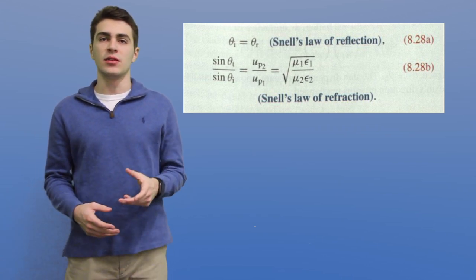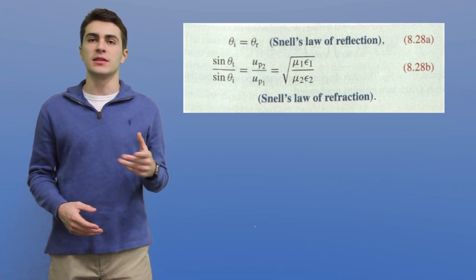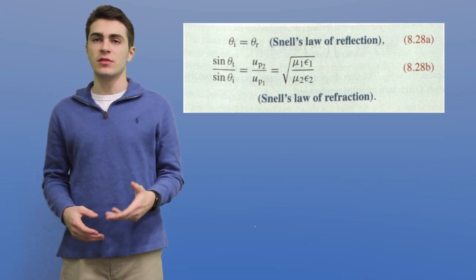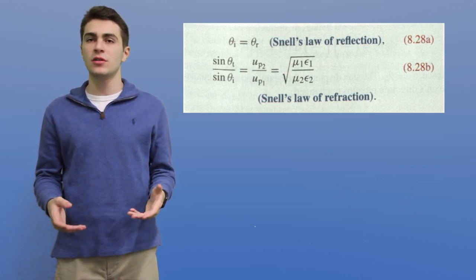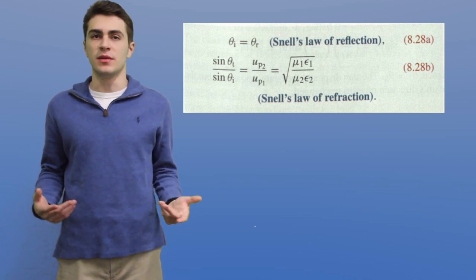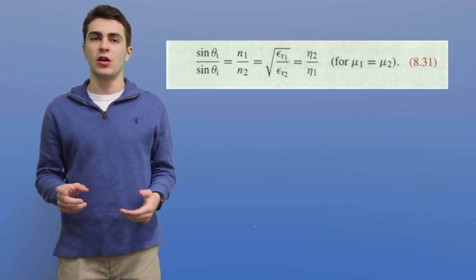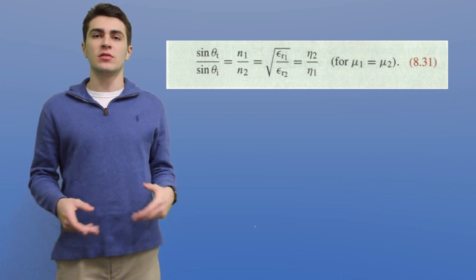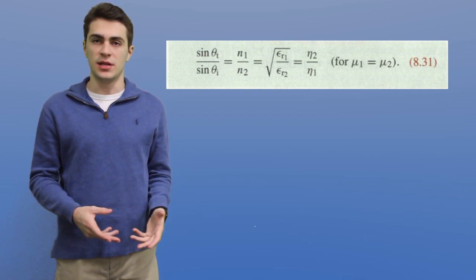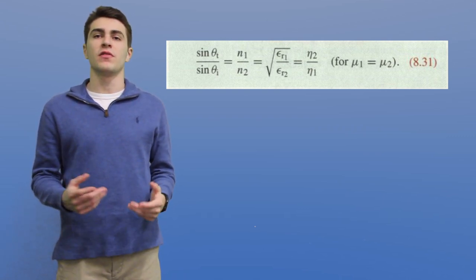Also, the sine of the transmitted angle divided by the sine of the incident angle equals the phase velocity of medium 2 divided by the phase velocity of medium 1. Replacing phase velocities with one of the equations we've gone over gives us: sine of the transmitted angle over sine of the incident angle equals the index of refraction of medium 1 divided by the index of refraction of medium 2. We can then manipulate this formula to help us find the critical angle which we previously talked about.